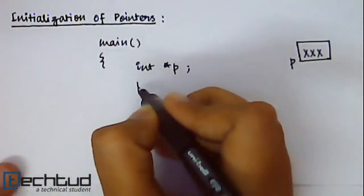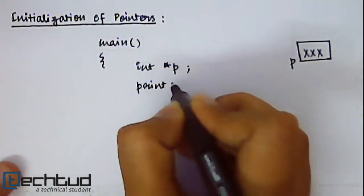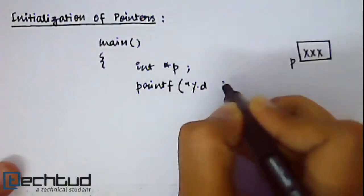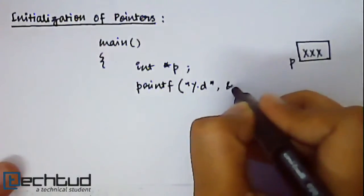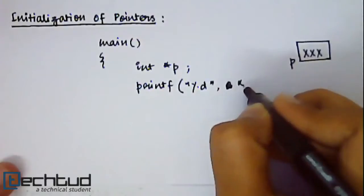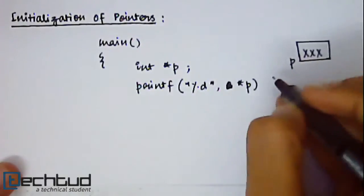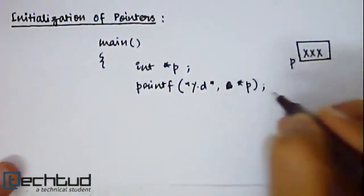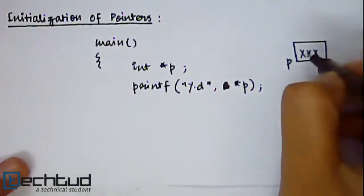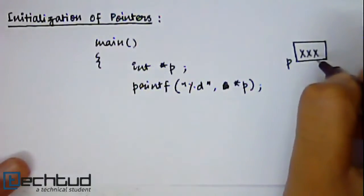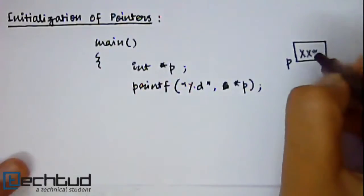So now if you try to access the value stored... the value of pointer P, that is the value stored in the address contained inside pointer P. Here the memory location inside P is a garbage value.